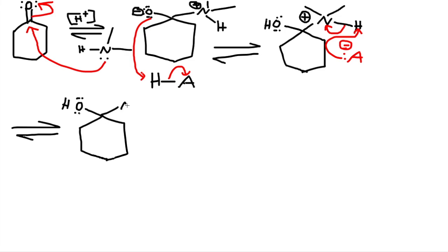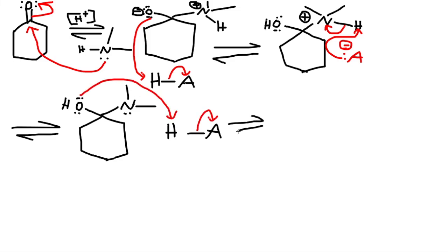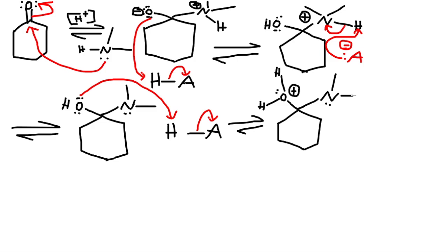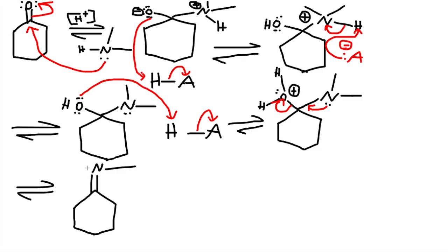Now the alcohol is formed. Nitrogen still has a positive charge, so the A-minus comes in, grabs the hydrogen, and kicks it off to nitrogen, giving us an OH and nitrogen with two carbons. The acid comes again — oxygen grabs the hydrogen, kicks off the A-minus. Now the oxygen has a positive charge; it is water and is a good leaving group. The nitrogen has a lone pair, forms a double bond, and kicks off the water.